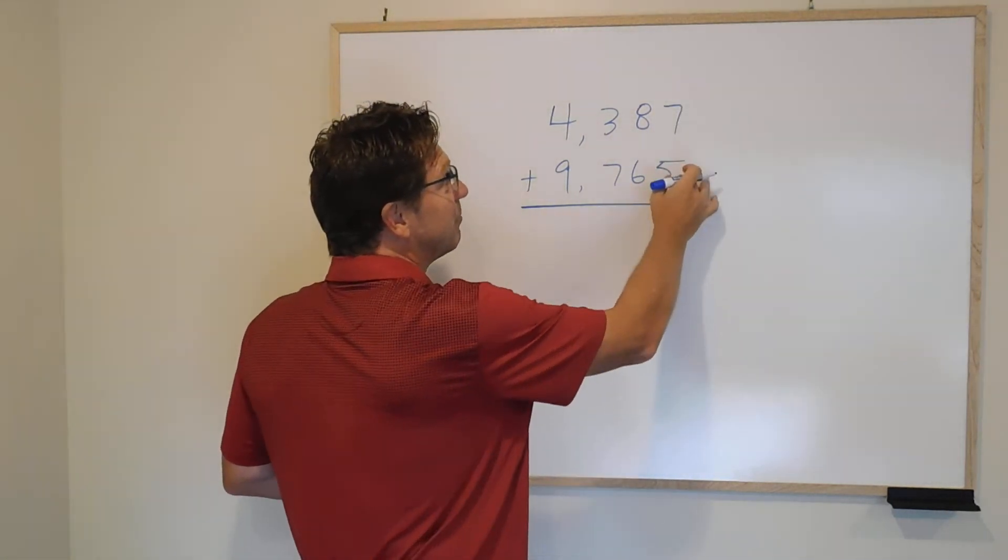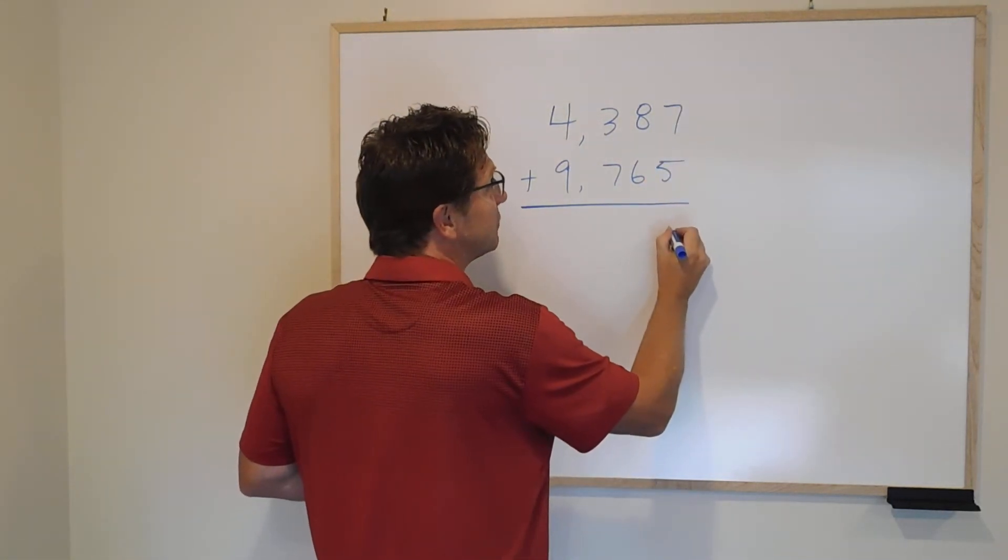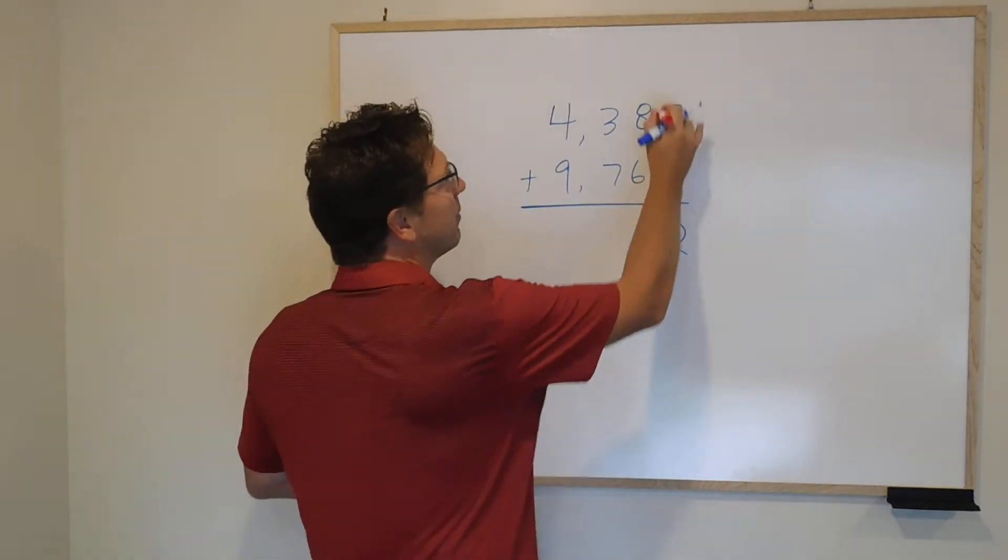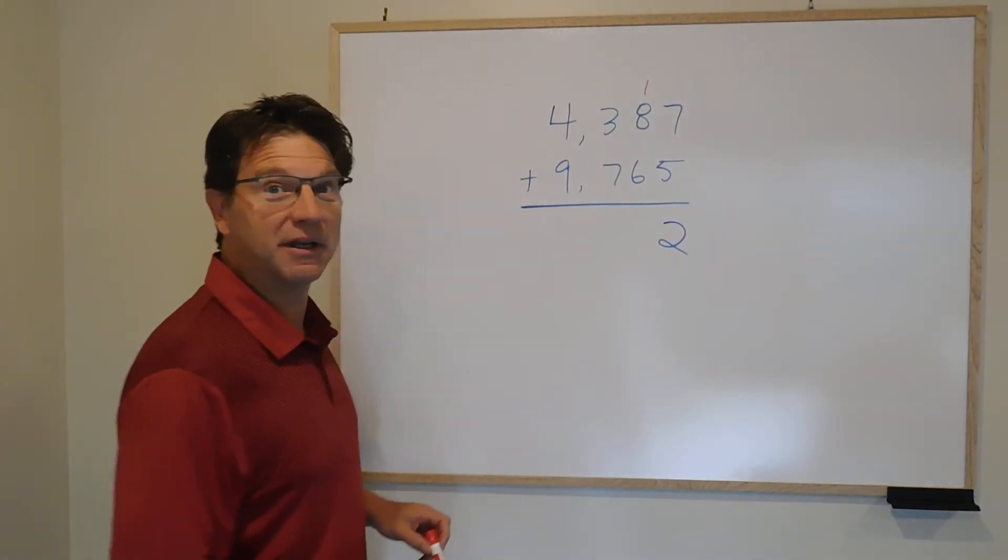We start by taking 7 plus 5 giving us 12. We put the 2 there but we have nowhere to put the 1 so it goes up in the next row.